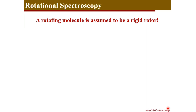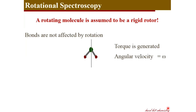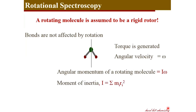A rigid rotor is one which does not change its distances during rotation — that is, the bond lengths between atoms are not affected by rotation. When the molecule rotates, the bonds are kept stiff; the rotation generates a torque and the molecule rotates with an angular velocity omega, creating an angular momentum of I·omega, where I is the moment of inertia — the sum of m·r² terms, where m is the mass of each atom and r is the bond length.